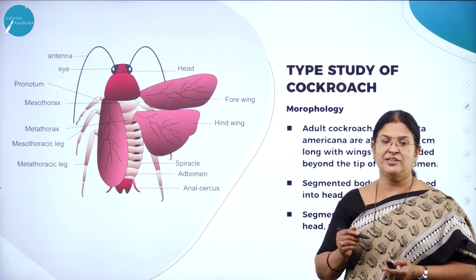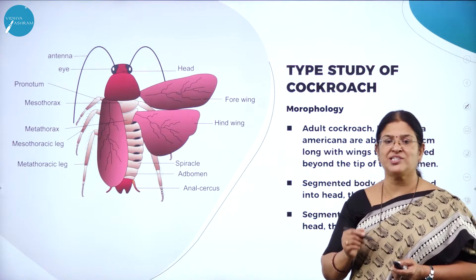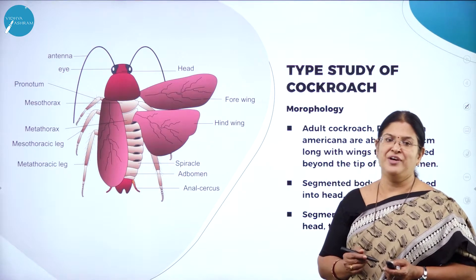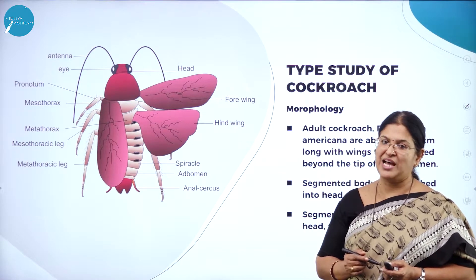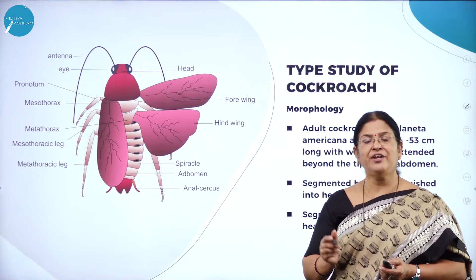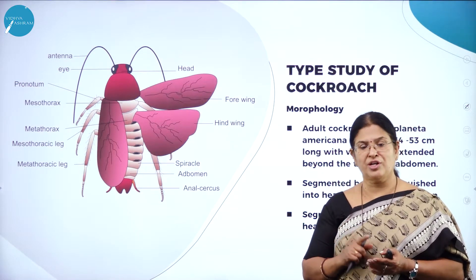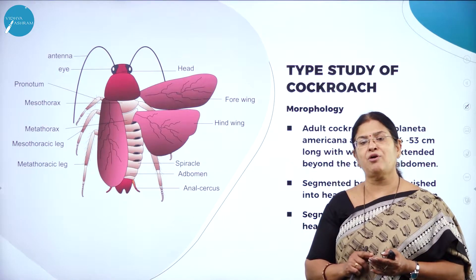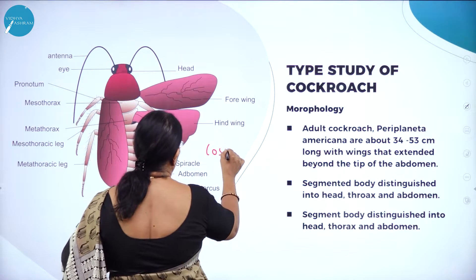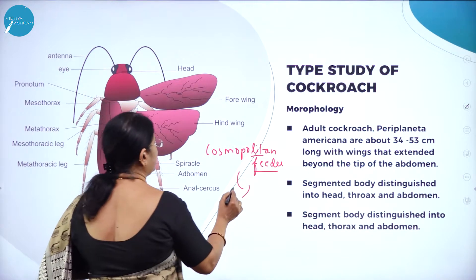The terrestrial earthworm is called Pheretima posthuma. The scientific name of cockroach is Periplaneta americana. Cockroach is one animal everyone is aware of in daily life, particularly found in the kitchen. The study of cockroach is taken because it is a cosmopolitan feeder — it feeds on almost all types of food: paper, clothes, food grains, vegetables, and fruits. Hence it is called a cosmopolitan feeder, and this animal is also a cursorial animal.